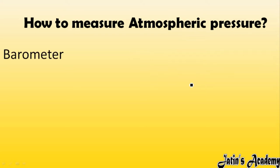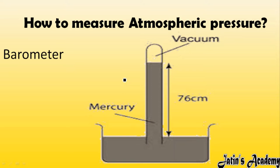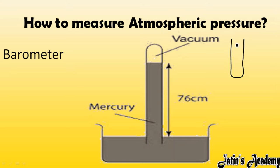To measure atmospheric pressure, we use an instrument called a barometer. In a barometer we use mercury. The barometer has two parts: a tube and a trough, or beaker. First, you take a test tube and fill it completely with mercury. When you fill the test tube with mercury, the air particles present inside the test tube come out, so there is no air particle inside.